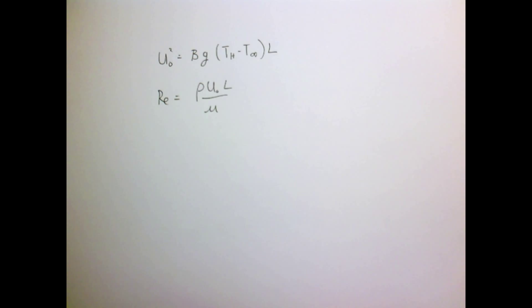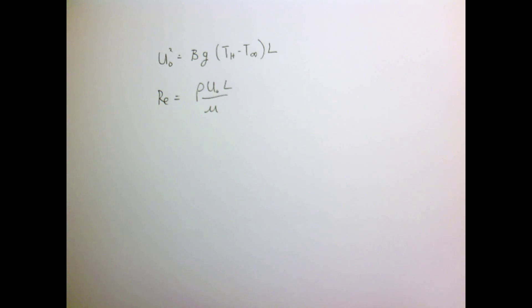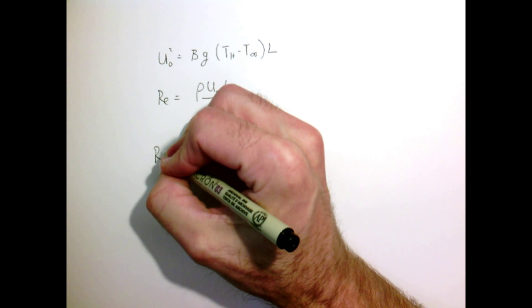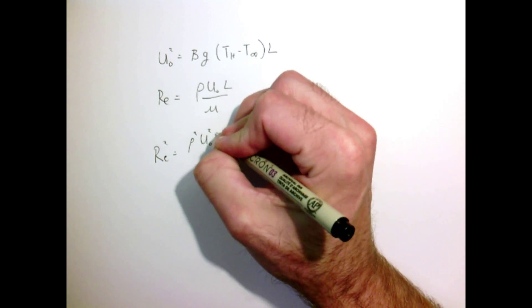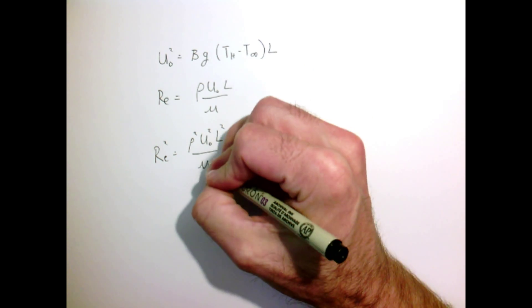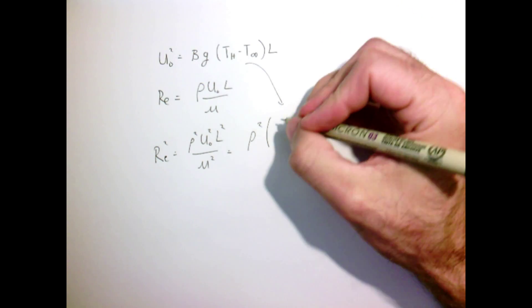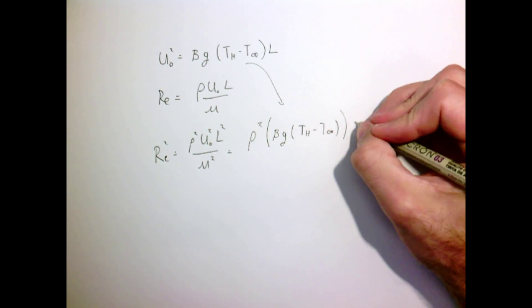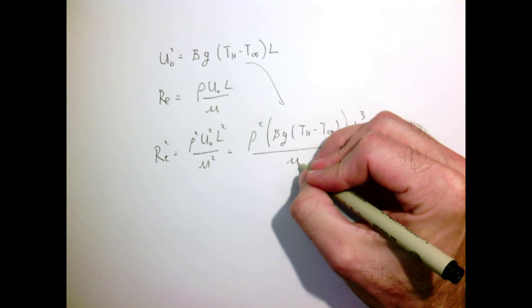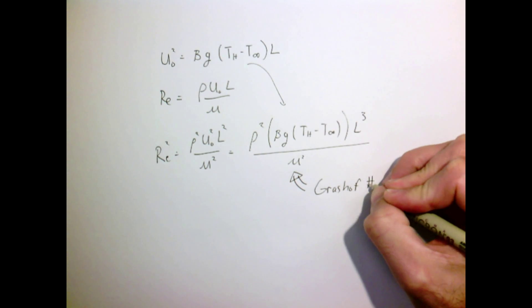Our scaling says that the velocity squared ought to be proportional to this or scale with this quantity here. Our Reynolds number is defined as density, velocity, length, divided by viscosity. I take my velocity scale and plug it in the Reynolds number. For convenience, I'll just square it so I can directly substitute in velocity squared. I get this new quantity: density squared times the volumetric expansion, gravity, temperature difference, length cubed, divided by viscosity squared.